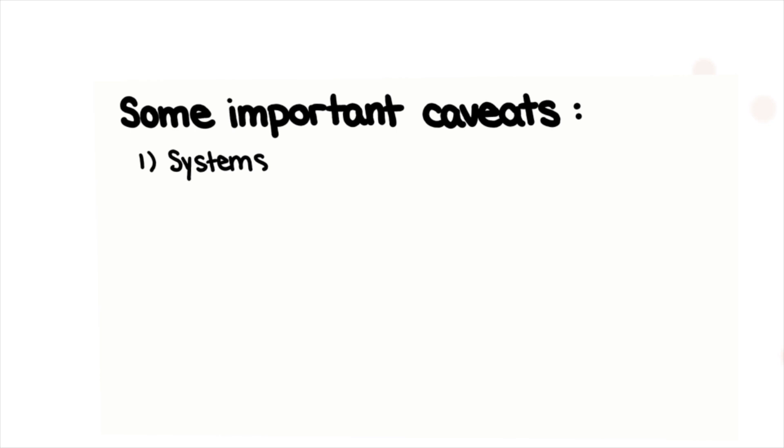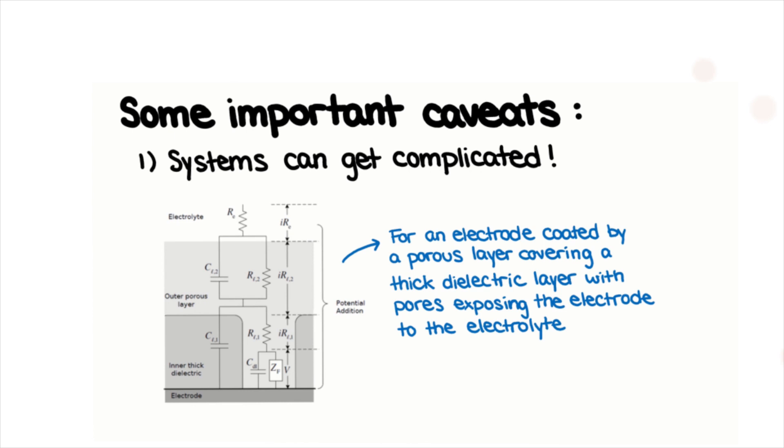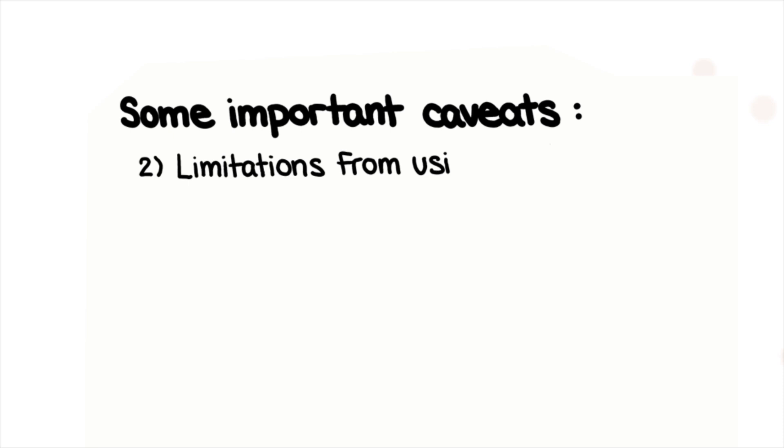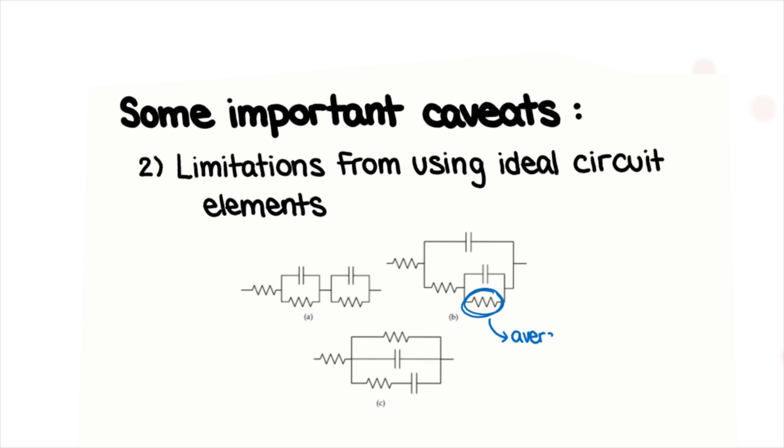There are a few important caveats to keep in mind when working with EIS. First off, equivalent circuit fitting is difficult, and only the simplest systems can be unambiguously matched to an equivalent circuit. Ideal circuit elements represent average bulk system properties that might not be totally faithful to distributed microscopic properties, and sometimes you can't accurately describe a system with a finite number of traditional circuit elements.